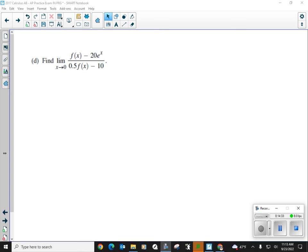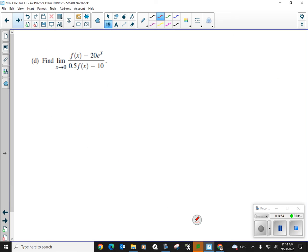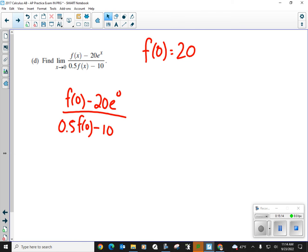4d. Last one for 4. This isn't too bad. Find the limit as x approaches 0 of f of x minus 20 e to the x, all over 0.5 f of x minus 10. Well, if we go back to the beginning, this is going to come in real handy. f of 0 is 20, okay? Bang, bang, bang. So I know that f of 0 is 20. I'm just going to bring that in. So if I try this by substitution, we have f of 0 minus 20 e to the 0, all over half of f to the 0 minus 10.